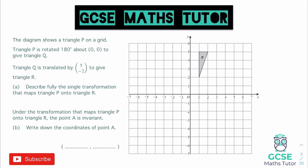Looking at this question: the diagram shows a triangle P on the grid. Triangle P is rotated 180 degrees about (0, 0) to give triangle Q. Triangle Q is then translated by the vector (5, -2) to give triangle R. Describe fully the single transformation that maps triangle P onto triangle R. That's an important point — it says single transformation, because obviously we're going through two transformations to get there, so we need to figure out what single transformation does that.